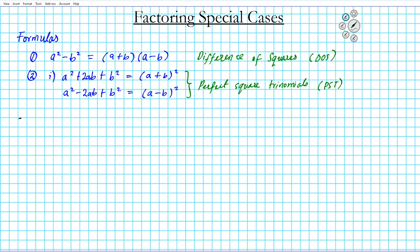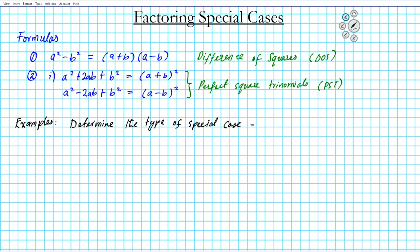So the examples of problems we're going to look at — the instructions are to determine the type of special case each given quadratic belongs to. So it is going to belong to one case or the other. After determining what special case it belongs to — either difference of squares or perfect square trinomial — you're then going to factor it and check your answer.